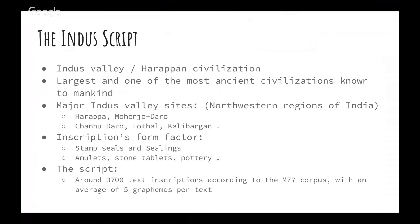This civilization is majorly found in the north-western regions of India, particularly at sites such as Harappa, Mohenjo-daro, Chanudaro, Lothal, and Kalibangan — spanning regions of India, Pakistan, and Afghanistan. These are some of the sites from which we collected data to build this algorithm. The inscriptions are majorly found as seals — just one inch by one inch squares. There are also sealings, which we'll discuss, and they are found as amulets, stone tablets, and pottery.